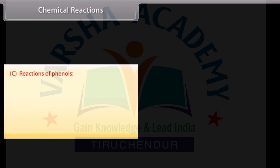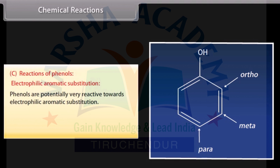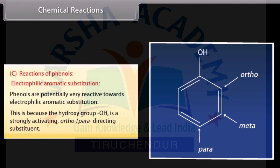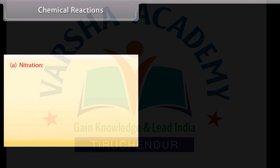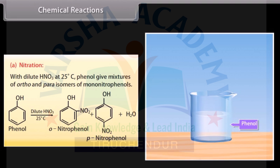Reactions of phenols - Electrophilic aromatic substitution: phenols are potentially very reactive towards electrophilic aromatic substitution, because the hydroxy group is a strongly activating ortho-para directing substituent. Nitration: with dilute nitric acid at 25 degrees Celsius, phenol gives a mixture of ortho- and para-isomers of mononitrophenols.